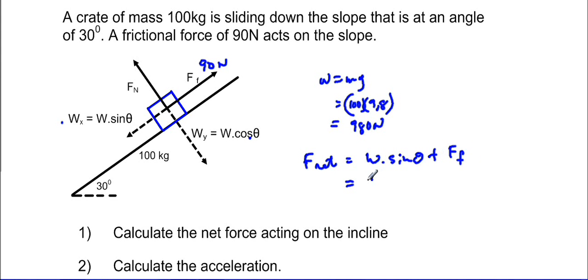Now our w sin theta will be equal to 980 times the sin of 30 degrees, plus our f of friction will be in the opposite direction of the motion, so it becomes negative and it will be 90 newtons in the opposite direction.